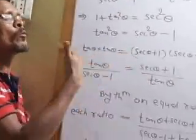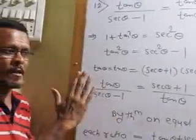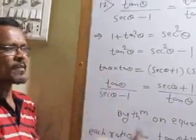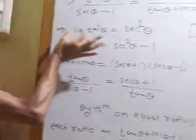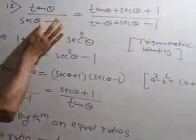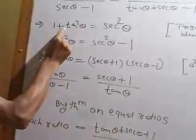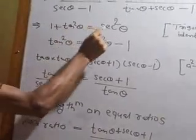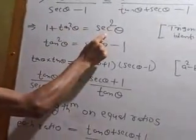We are using the theorem on equal ratio from algebra in 9th standard. First, using that identity: 1 plus tan square theta equals sec square theta.